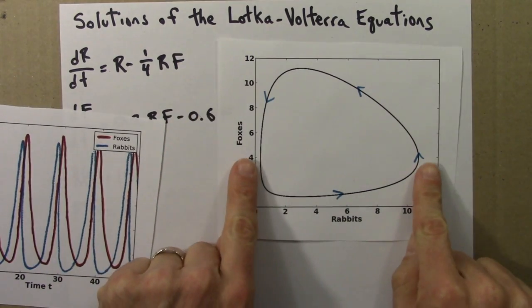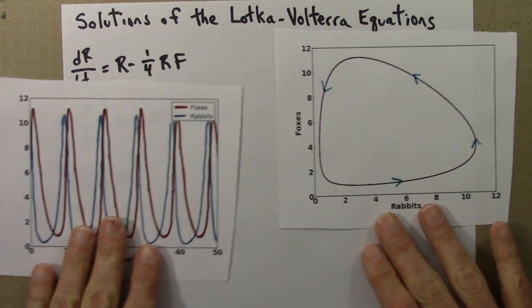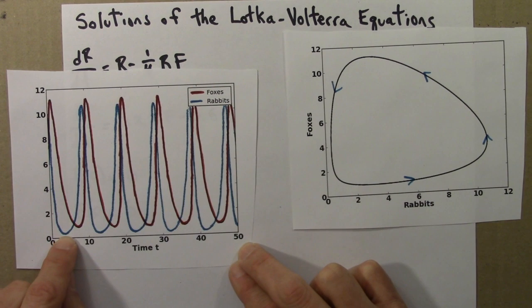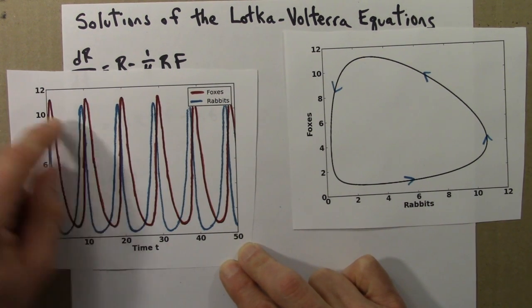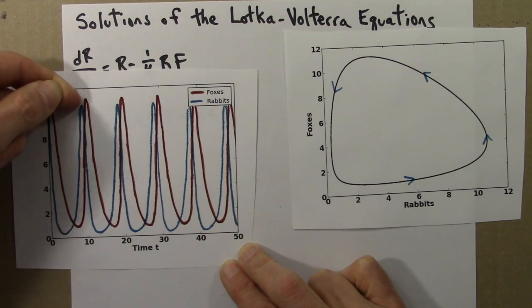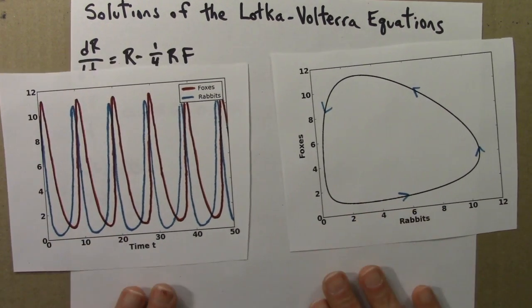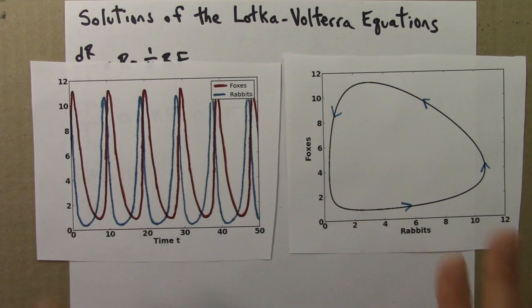And that's what we see here. The rabbits go down to less than 1, almost a half, and their maximum is a little bit less than 11.